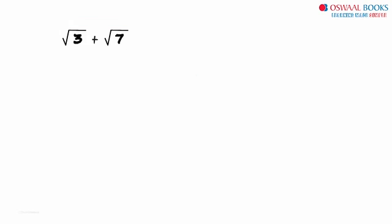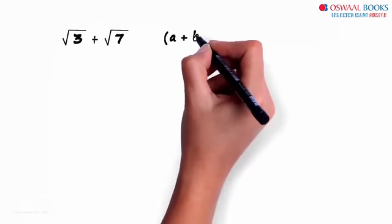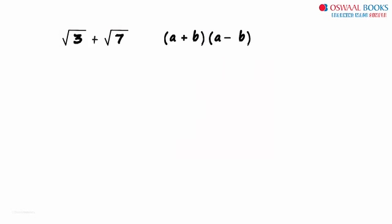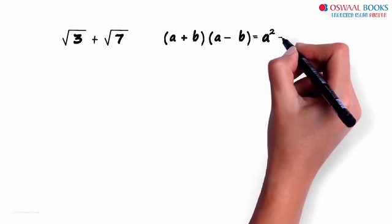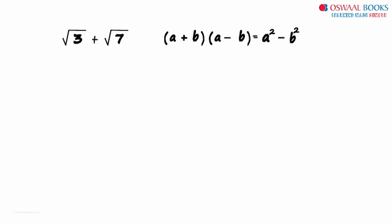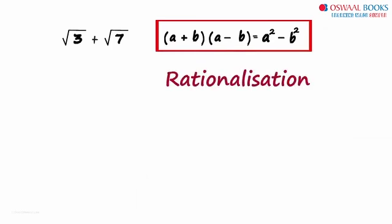Let me give you a hint. A plus B multiplied by A minus B equals A squared minus B squared. This is one of the most important identities we will use in rationalization.